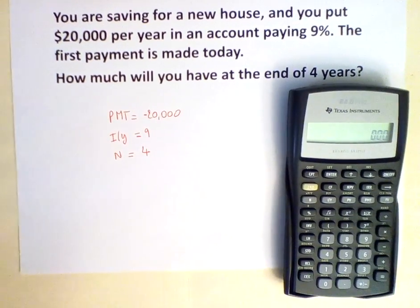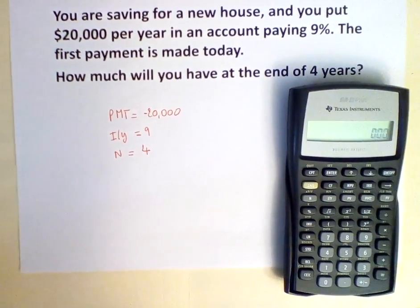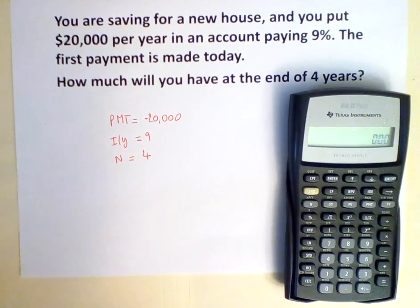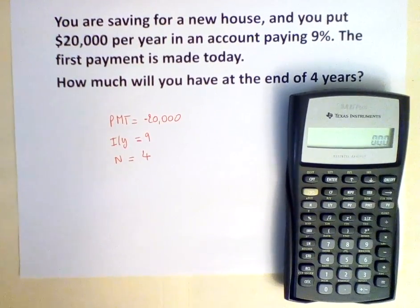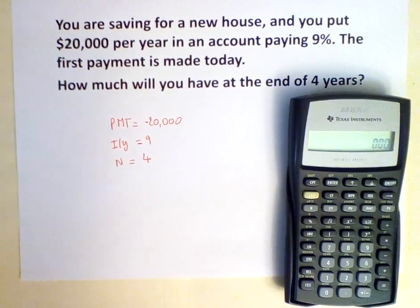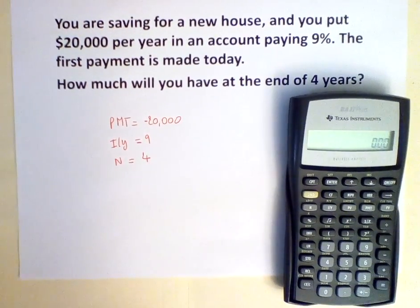If we clear everything, you see that we have the zero right there, but that BGN has disappeared. This means that the calculator is set to end mode.